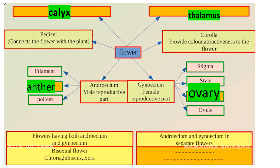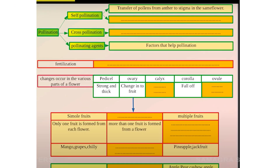When Androecium and Gynoecium are in separate flowers, they are called Unisexual Flowers. For example, Pumpkin and Bitter Gourd are unisexual flowers.